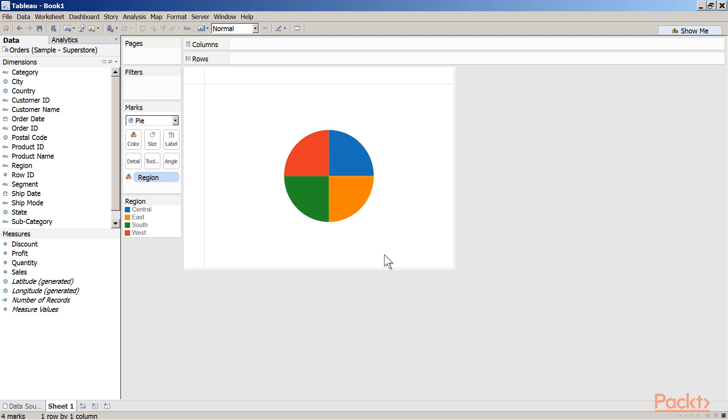The reason is at this point in time we have not added any measure to the size or angle feature on the marks card. Let us have the size of the slices determined by the amount of sales made in each region. Drag the measure sales from the measures area under the data pane and place it on size on the marks card. Notice the change in size of the slices. The size is as per the sales made in each region.